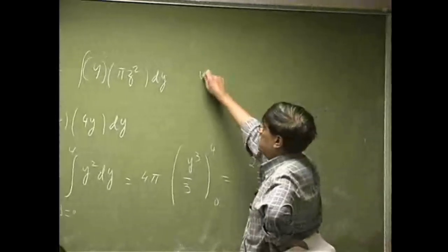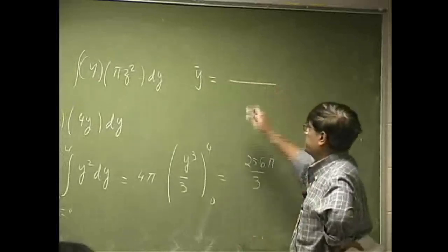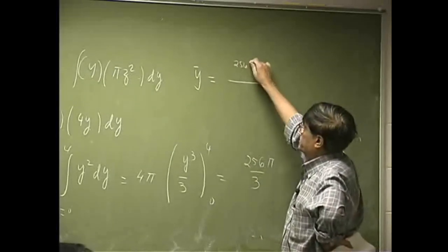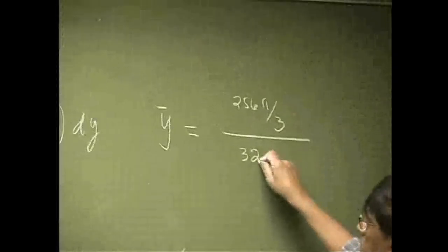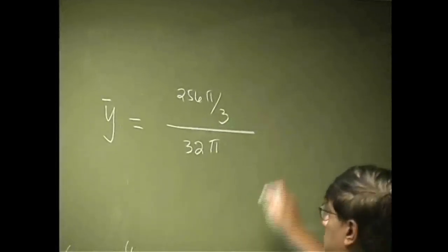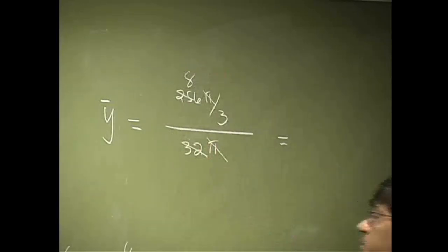Which means the coordinate y bar, that should be 256 pi over 3 divided by 32 pi. Now, this gets cancelled from here. This will be 8.